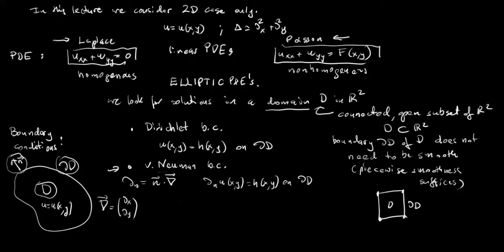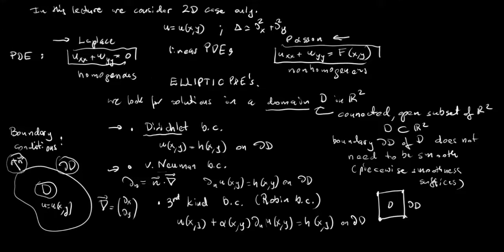And we request that the normal derivative of function u is equal to a given function on the boundary. So this is the von Neumann boundary condition. And there is the third kind of boundary conditions which in the literature are called boundary conditions of the third kind. In British or American literature it could be called Robin boundary conditions. And these boundary conditions request that the linear combination of the unknown function and its normal derivative is equal to a given function on the boundary.